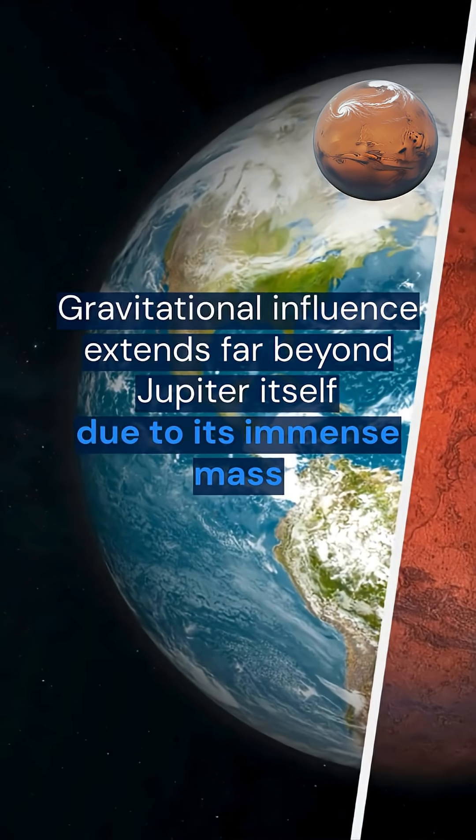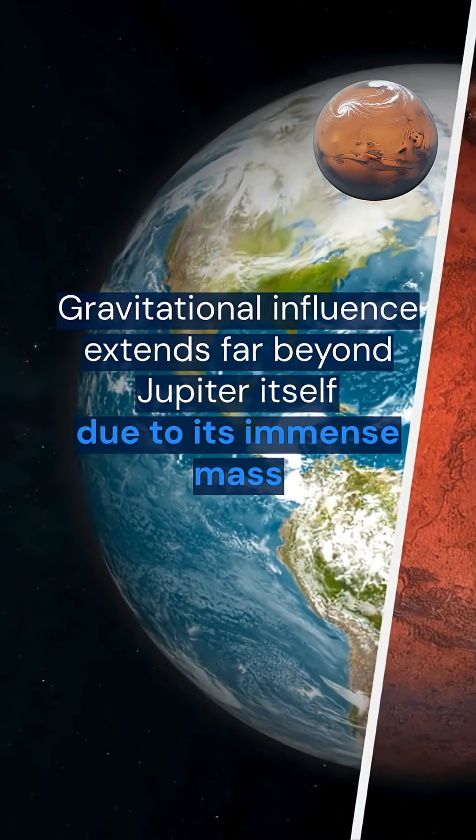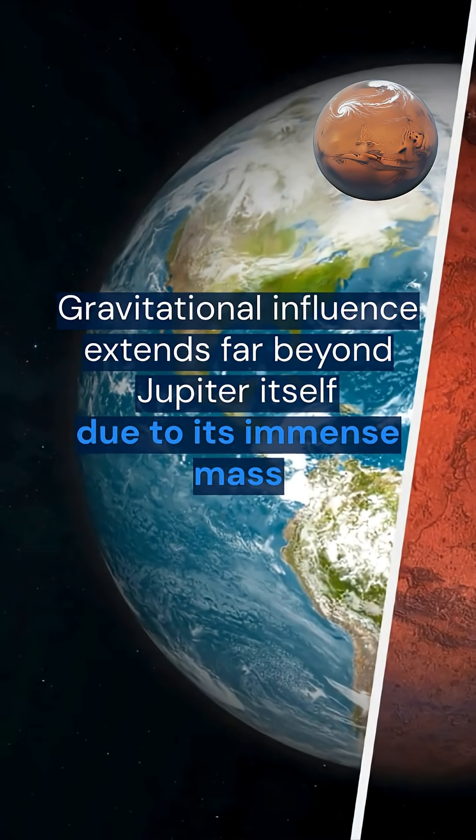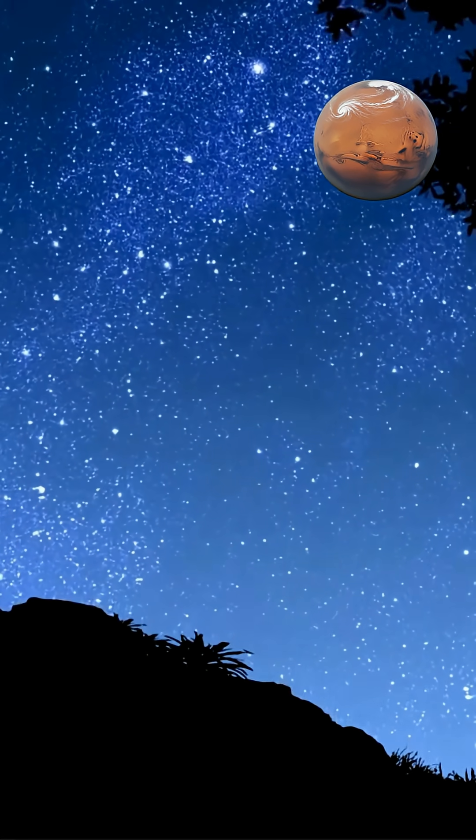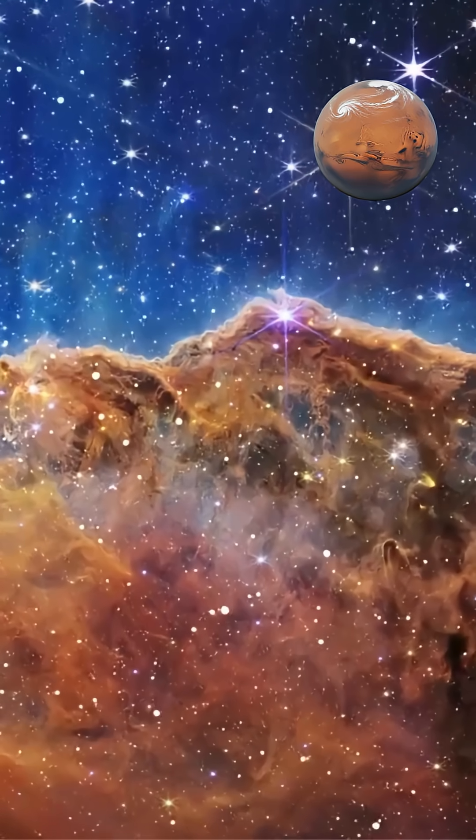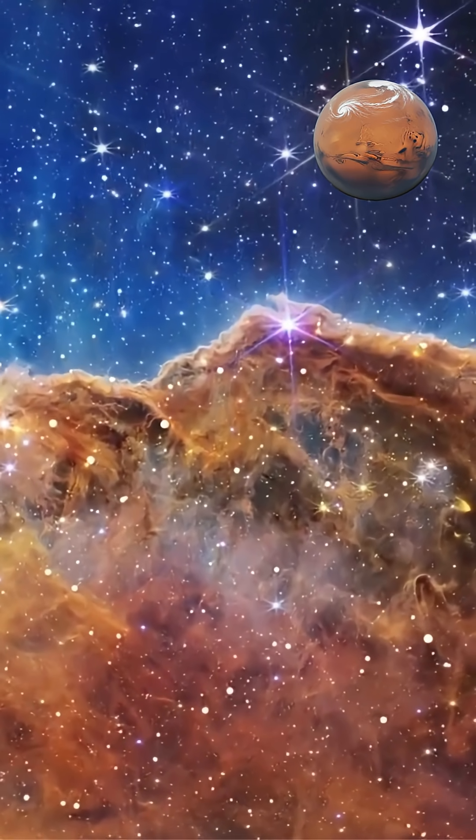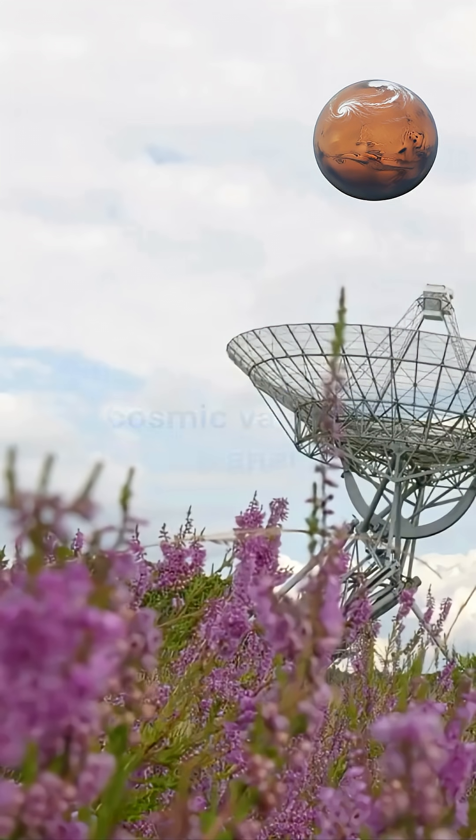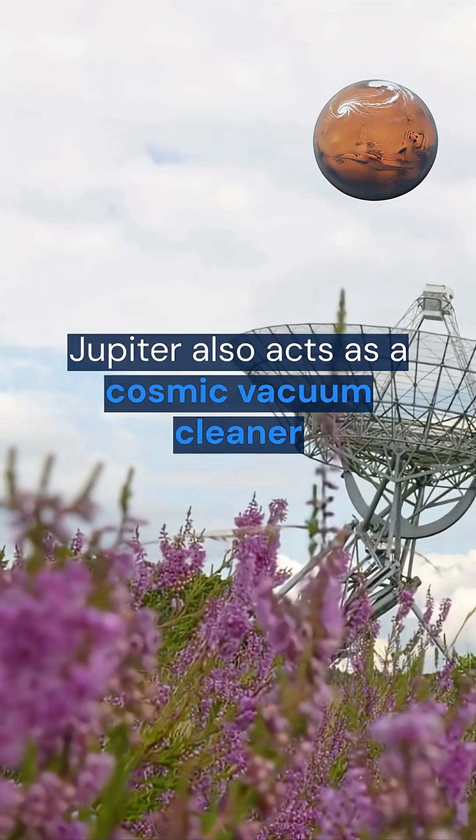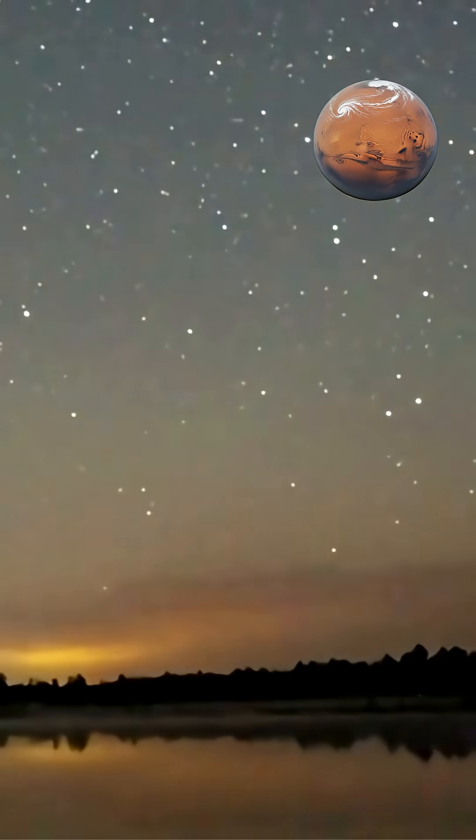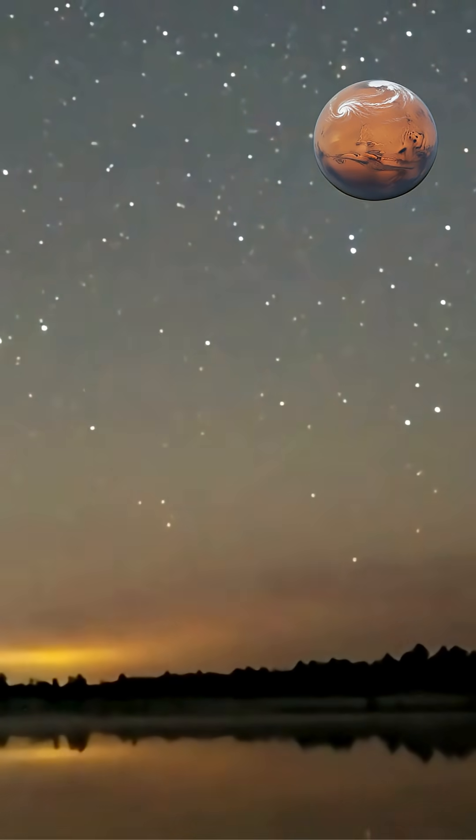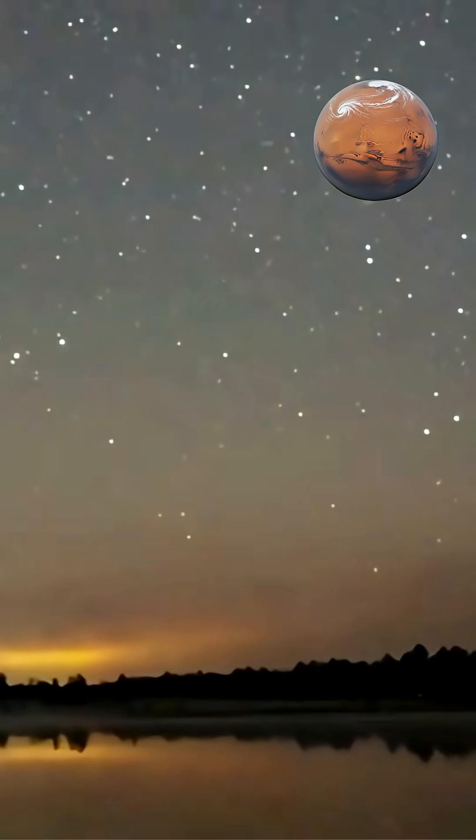Gravitational influence extends far beyond Jupiter itself due to its immense mass. The planet's gravity shapes the asteroid belt, preventing rocks there from coalescing into a planet. Jupiter also acts as a cosmic vacuum cleaner, deflecting or capturing comets and asteroids that might otherwise impact inner planets like Earth.